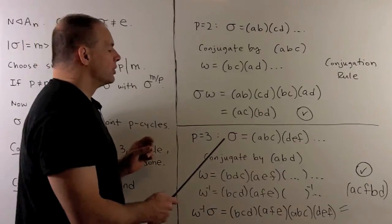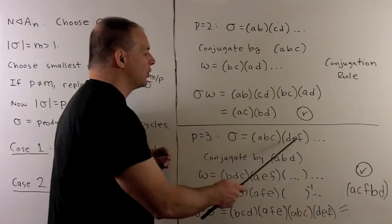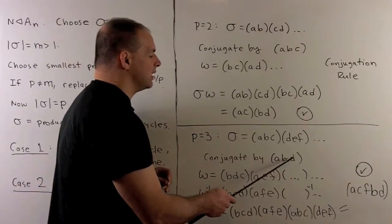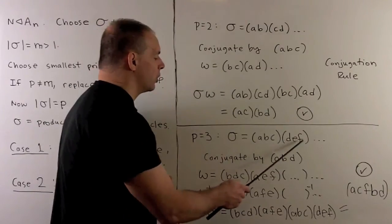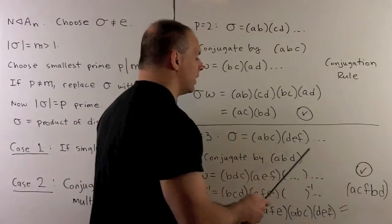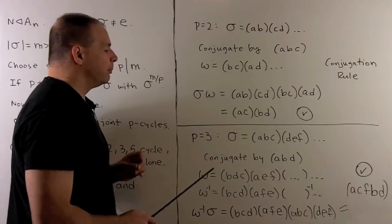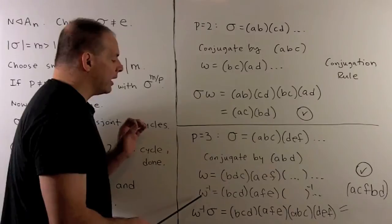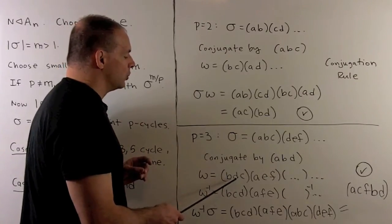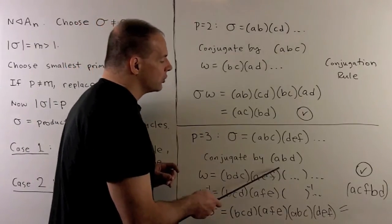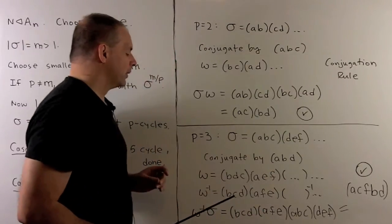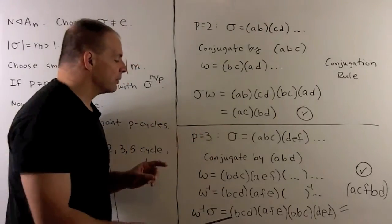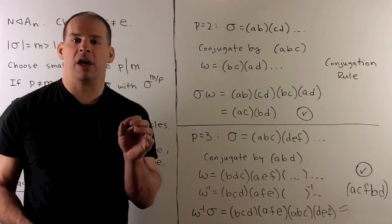Next case, if p = 3: sigma is a product of disjoint three-cycles — at least two, or we're done. Conjugate by the three-cycle (A B D), so A→B, B→D, D→A. The first three-cycle goes to (B D C) and the second to (A E F); remaining cycles are left alone. We multiply by omega inverse instead, so omega inverse fixes B and reverses the others: (B C D)(A F E). The terms not shown cancel, and we're left with four three-cycles whose product is a five-cycle. We know how to turn a five-cycle into a three-cycle, so we're done in this case.